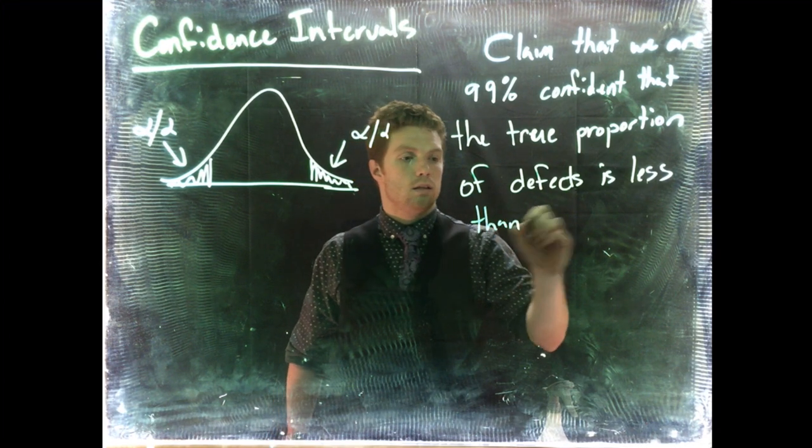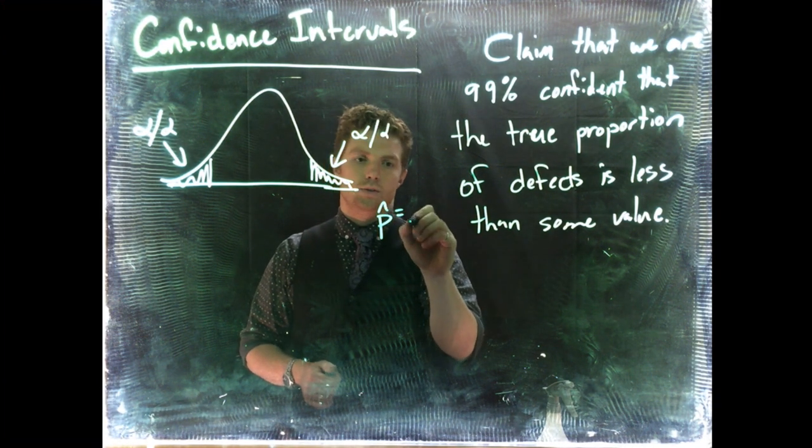Okay, so here we're talking about, let's say we're going and talking to our CEO. We're at a manufacturing company and the proportion of defects is a big deal. Now when we go out and we took our sample, let's say that our P-hat was equal to, we'll say, 8% of our items were defects.